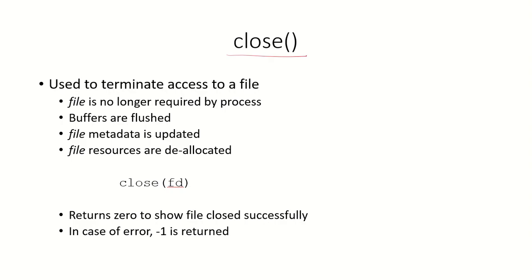Close is another system call and this is used to terminate the access to a file. Whenever a process sends this system call, that means this file is not required by the process anymore. So the kernel will flush out all the buffers which were associated with the file. The metadata associated with the file will also be updated and the resources that were allocated to it will be deallocated.